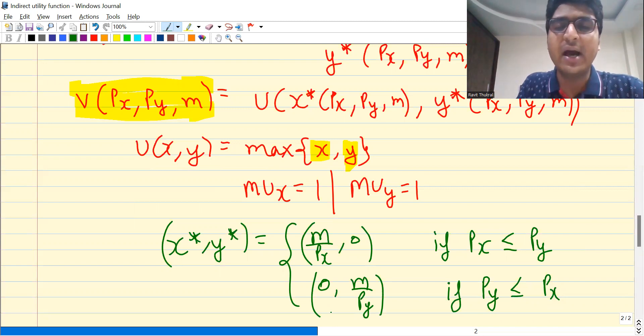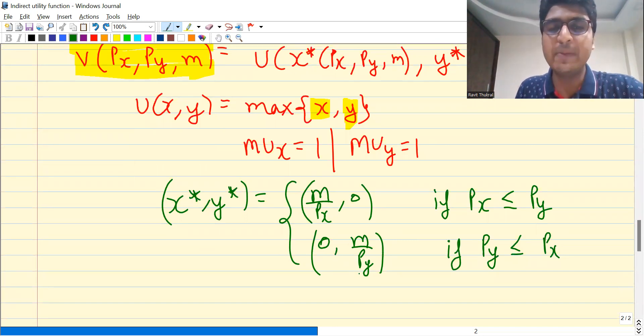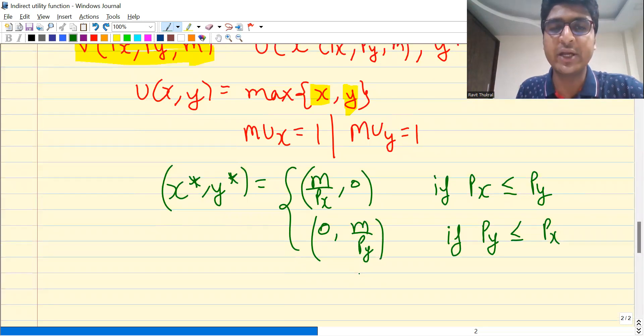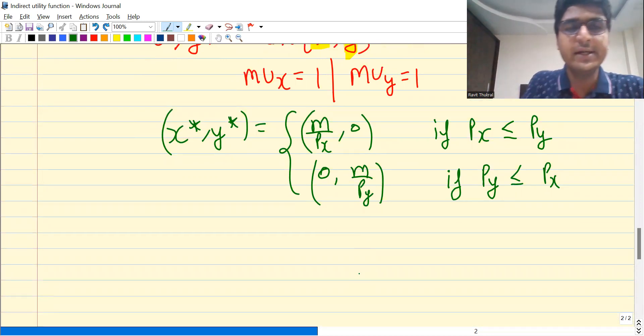That doesn't matter, both will give me same level of utility. So if Px is equal to Py, then both will give you same level of utility. So simply you will buy the good which is cheaper because marginal utility from both goods is constant and equal. So I have X star and Y star, now I need to find indirect utility function.